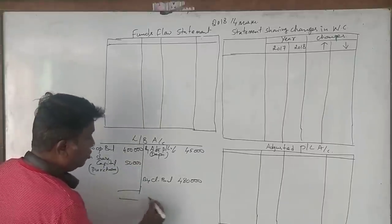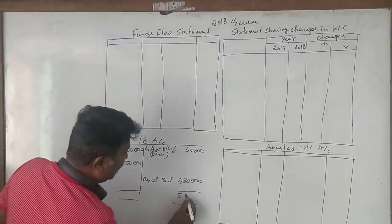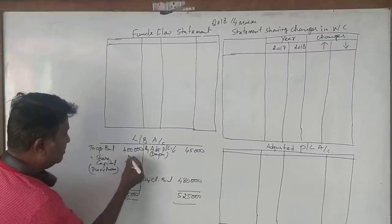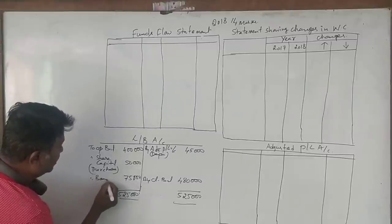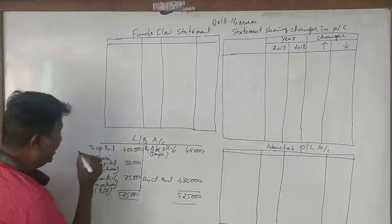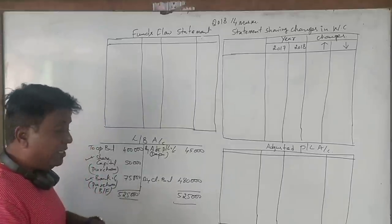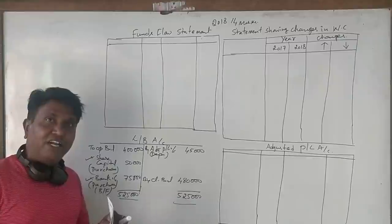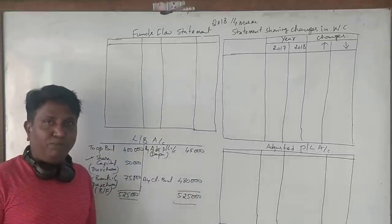Now checking the totals — the credit side is more at Rs 5,25,000. Taking the balancing figure: during the year we have purchased land and building worth Rs 50,000 by issue of share capital, and Rs 75,000 by paying cash. So totally during the year, we have purchased Rs 1,25,000 of land and building — Rs 50,000 by issue of shares and Rs 75,000 by paying cash.